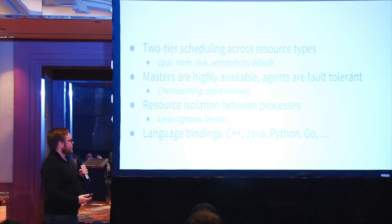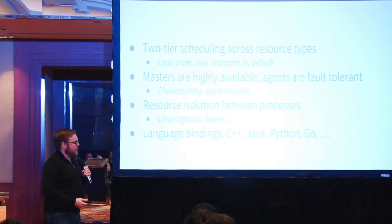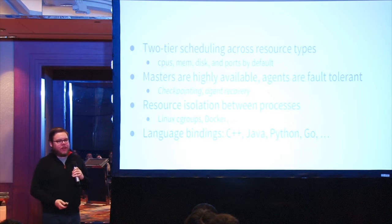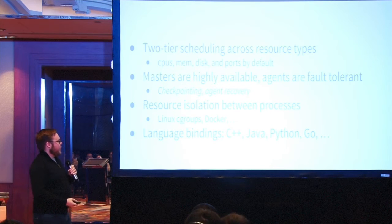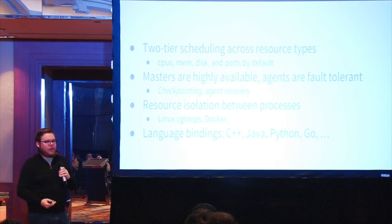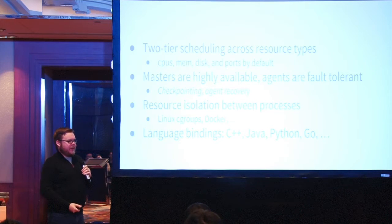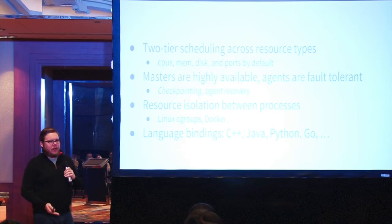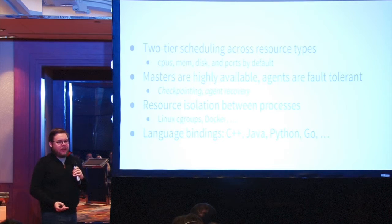Another really key selling point of Mesos is the language bindings available for writing distributed systems on top of it. There's C++, Java, Scala, and Python. The folks at Mesosphere maintain the Go bindings. There are Ruby bindings and I've seen early bindings too — just a lot of different languages to write against Mesos. With the new HTTP API, that's gotten even easier.